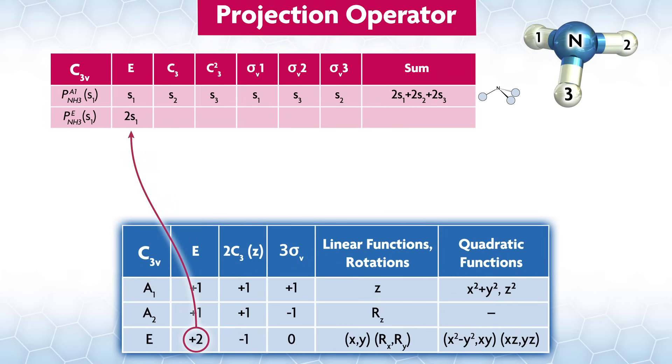For e, we multiply by two. For c3, we multiply by minus one. Finally, for the sigma v operations, we multiply by zero. As a result, for the projection of e on s1, we have this. We have a positive phase s1 that is twice as large as negative phase s2 and s3, so it looks like this.